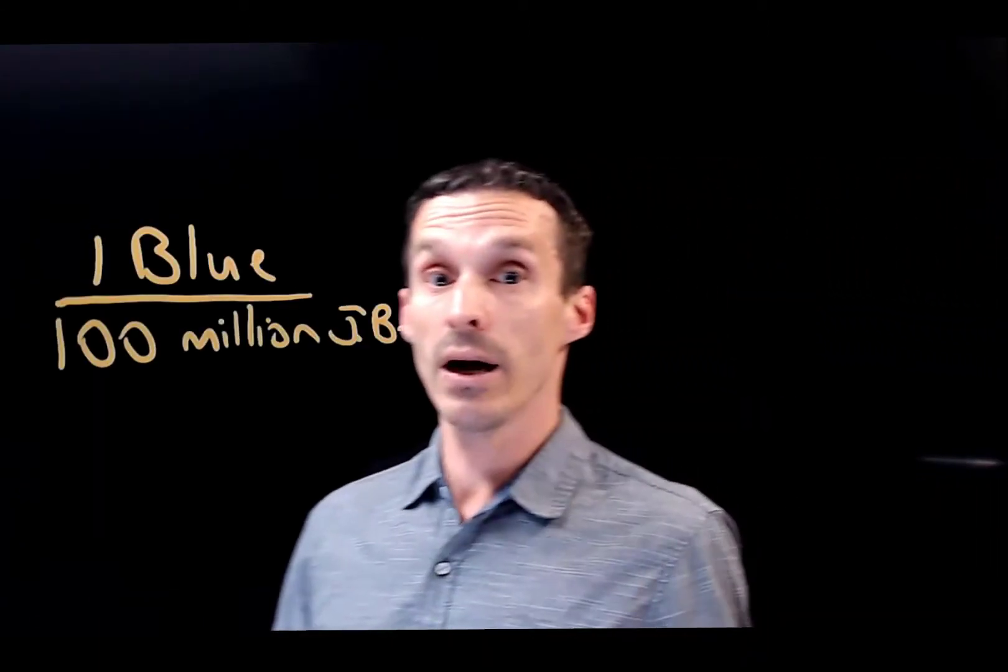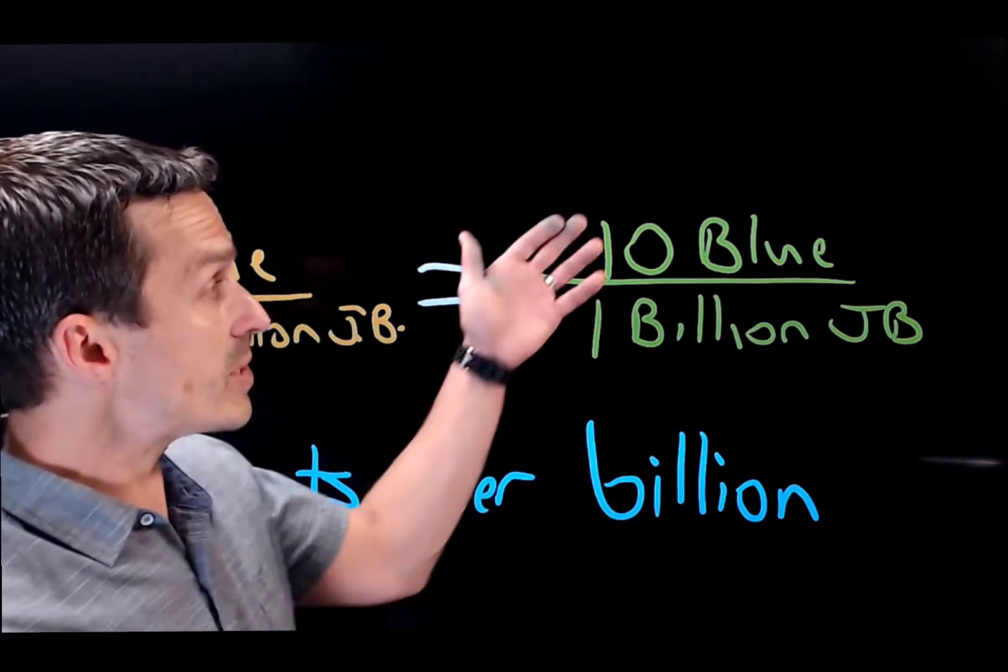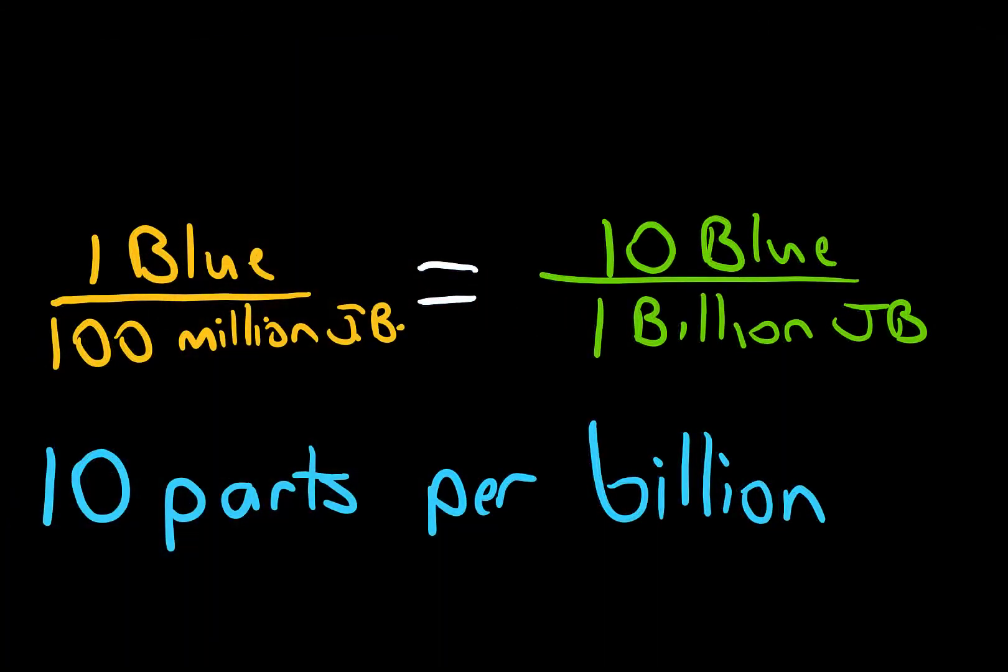Of course, that ratio would be one in a hundred million. Now, there's other ways to express that. So if you'd prefer, you could say ten out of a billion. So ten parts per billion, right? There's just a different way of expressing these concentration units.